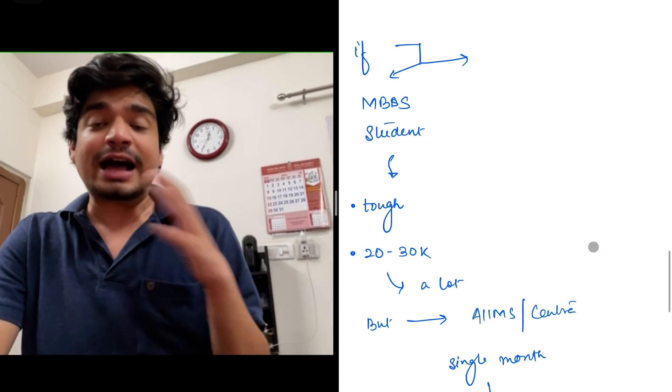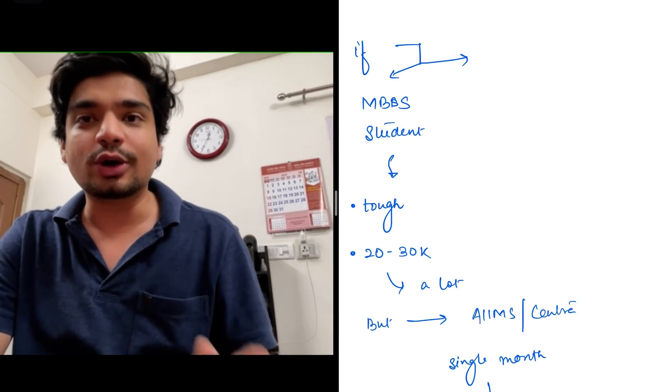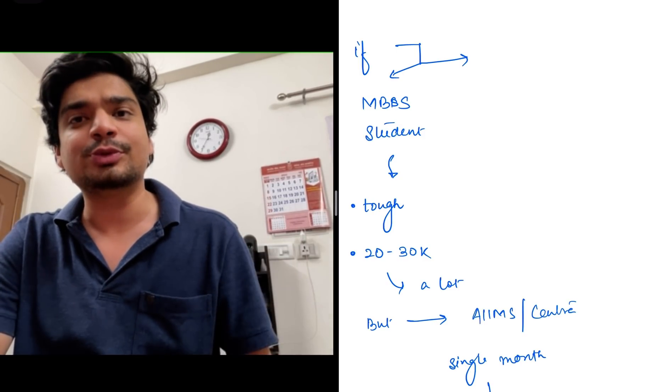You first need to reach two milestones—1,000 subscribers and 4,000 watch hours. After that, imagine I'm at 1.5 lakh subscribers and I'm earning $300-500 from YouTube.